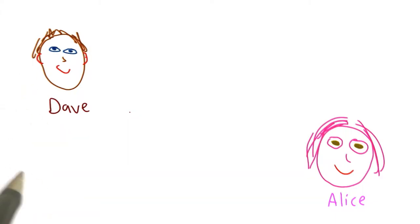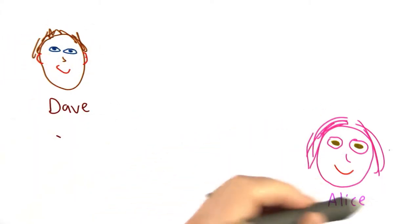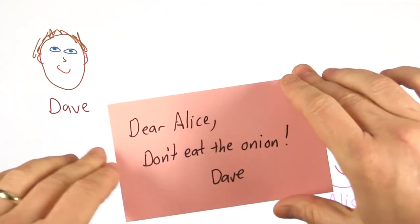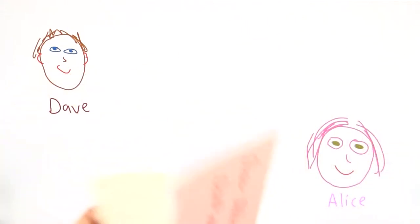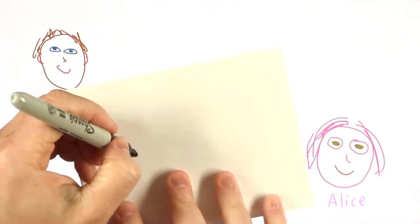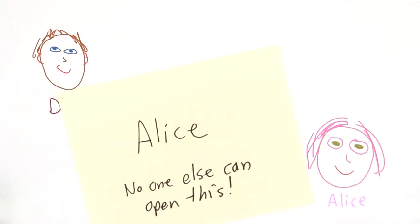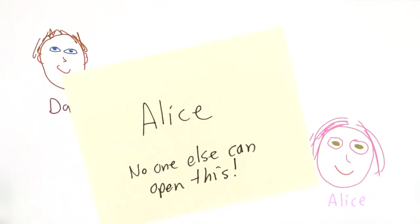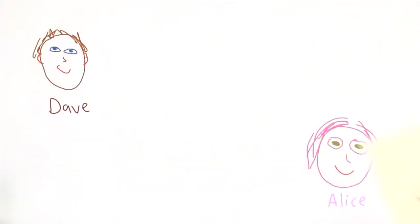Let's think of a simple example first. Suppose I want to send a message to Alice. If I just want confidentiality, I can put it in an envelope, seal the envelope, and write that it's for Alice. And to make sure my seal is good, I'll make sure that no one else can open this. And I could give the message to Alice.